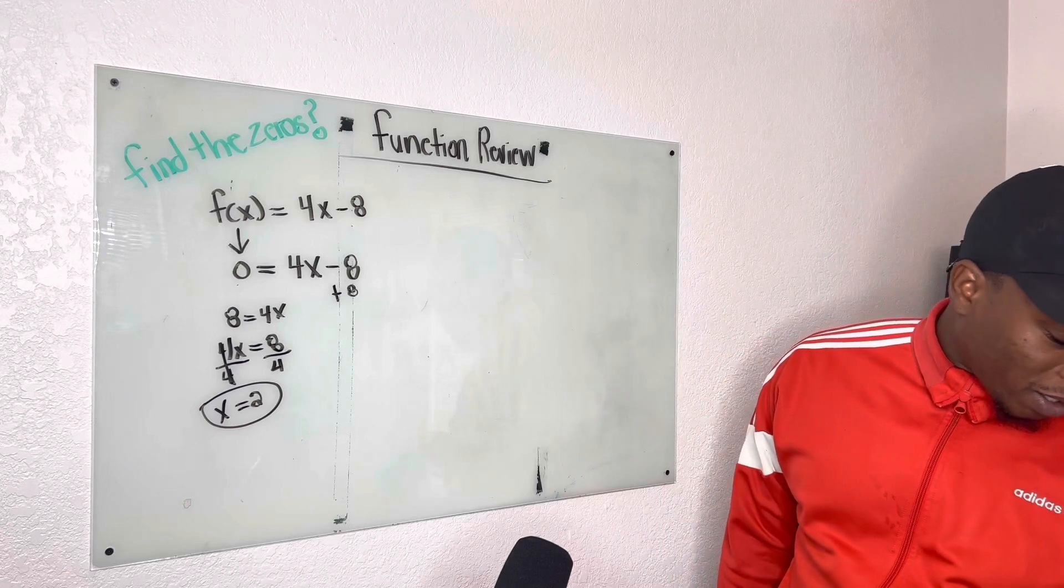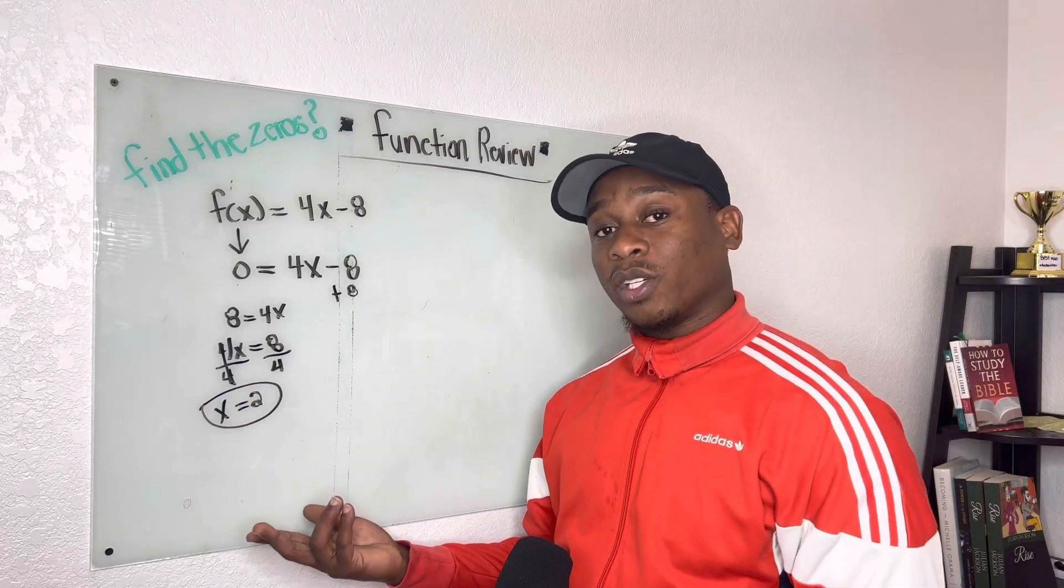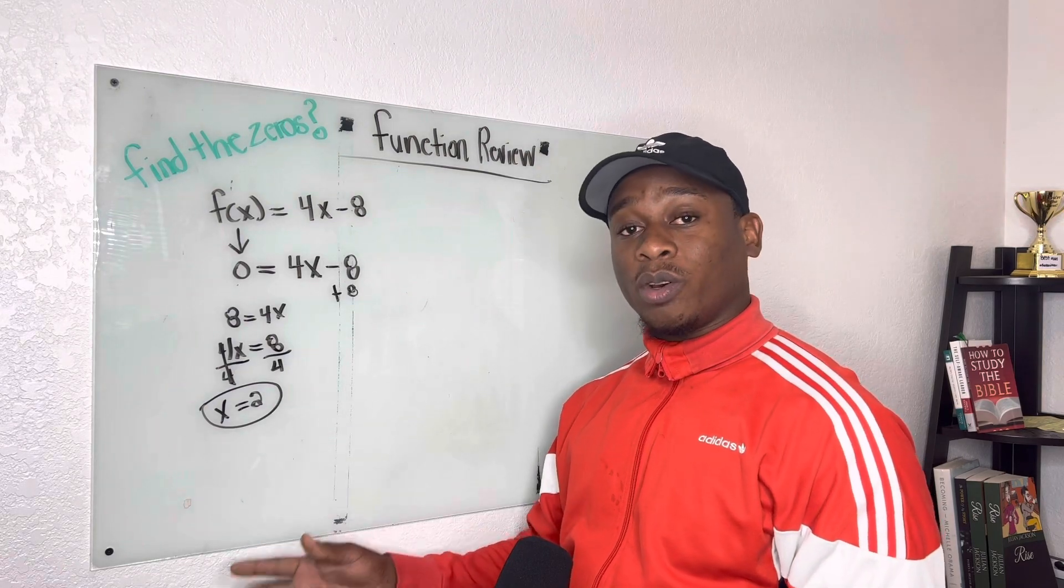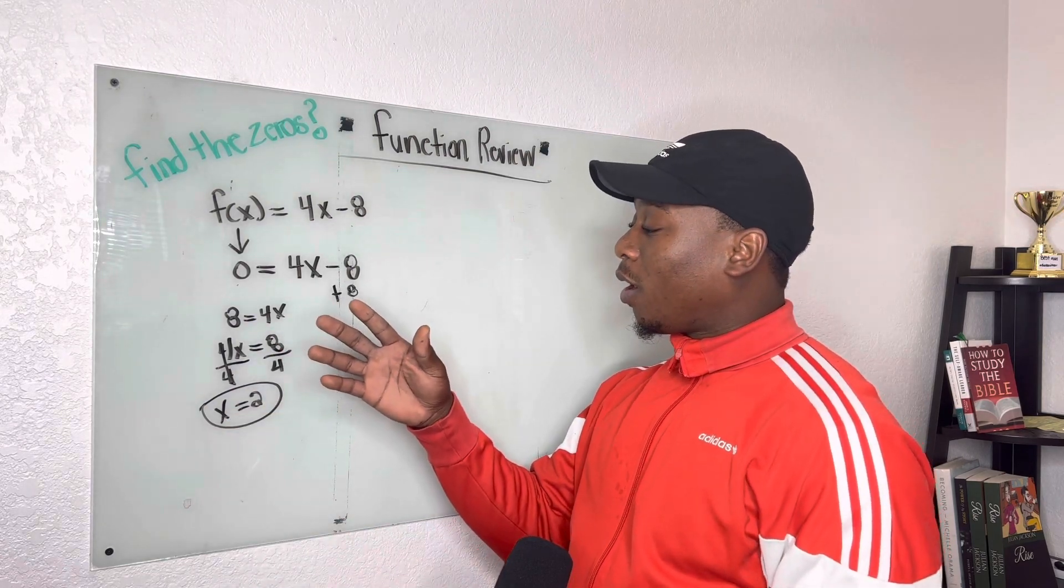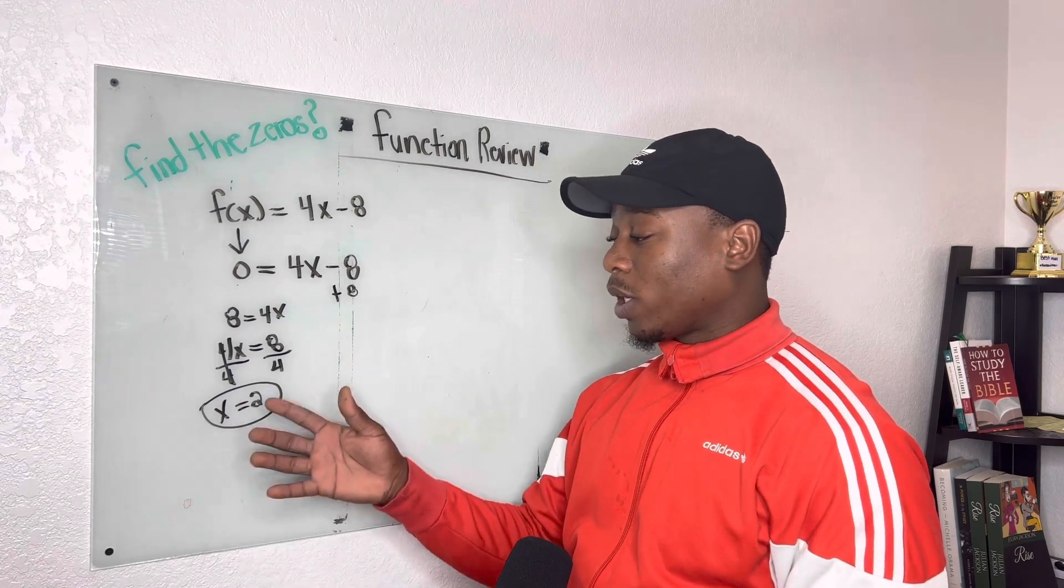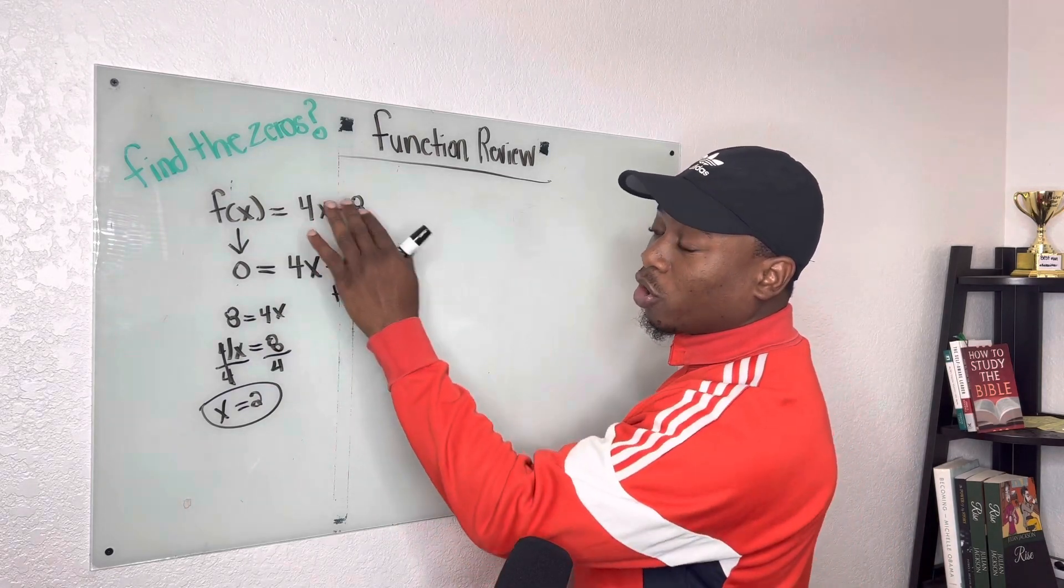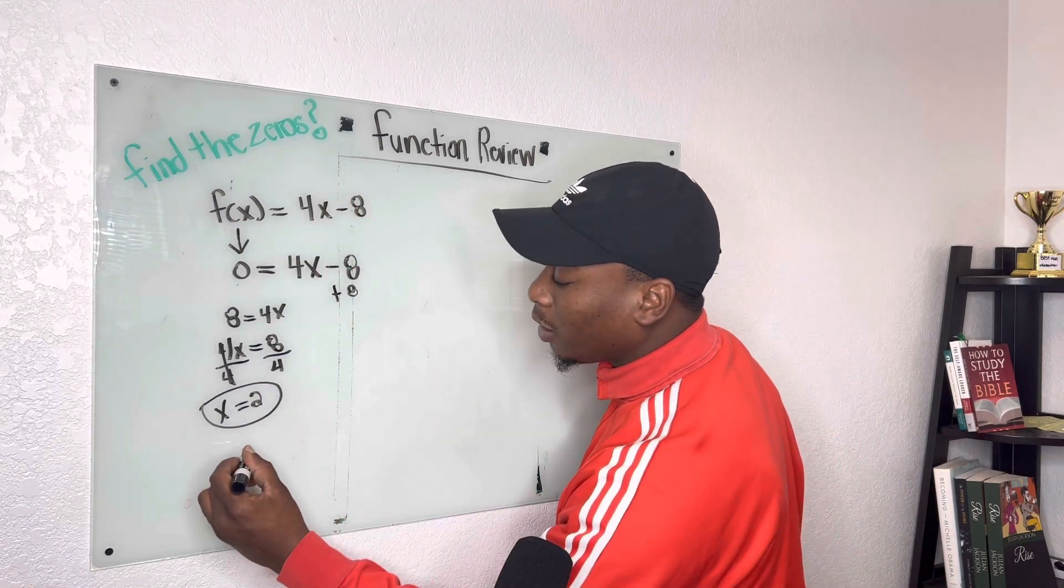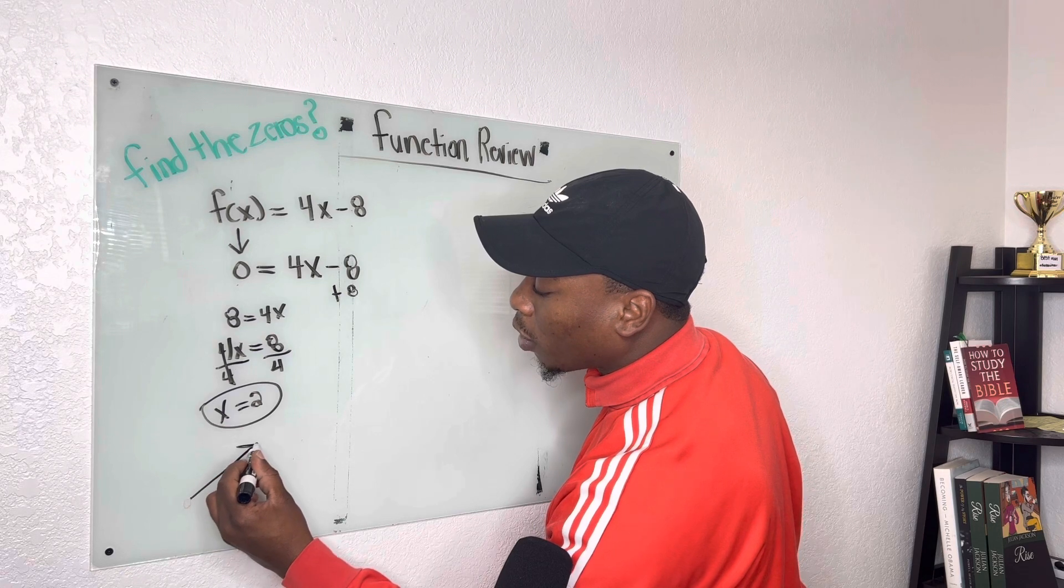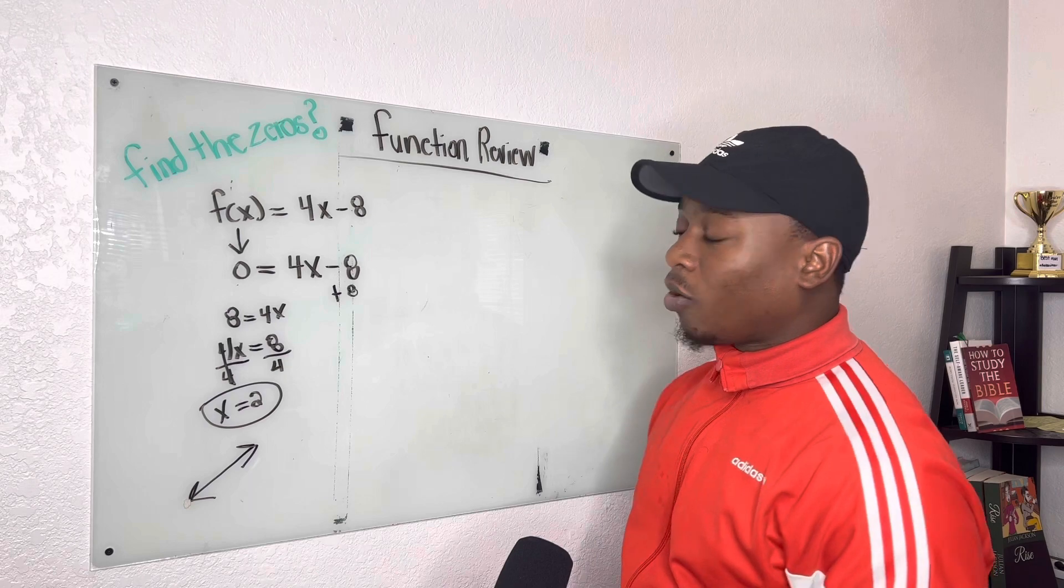So what exactly does this mean? This is an intercept. We know that when we look at the graph, it's going to cross the x-axis when x is 2. And just remember, since there is no exponent, this is a linear function, meaning on the graph, it's going to be a straight line.